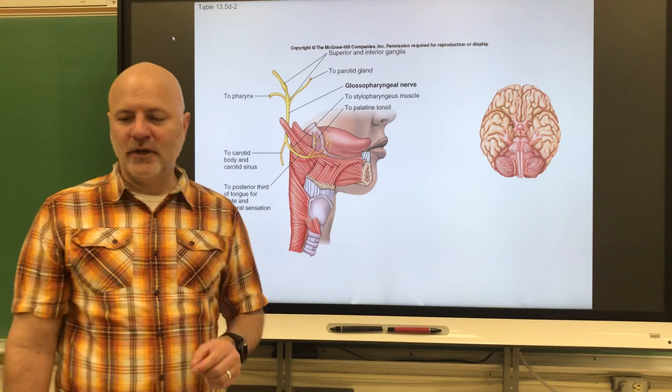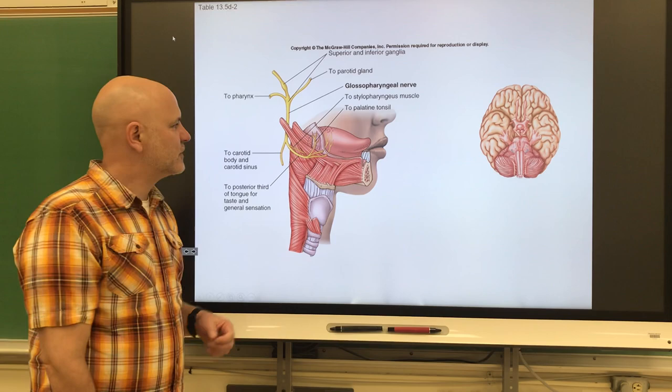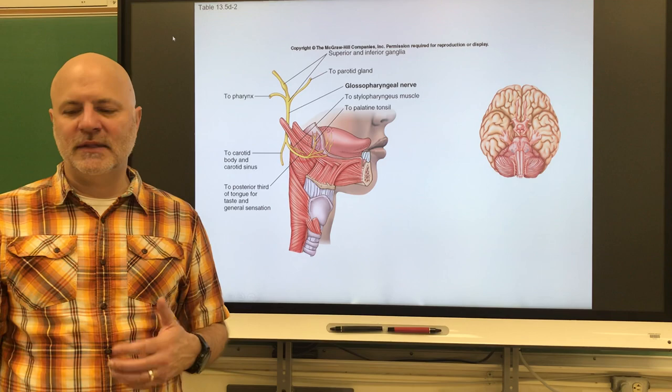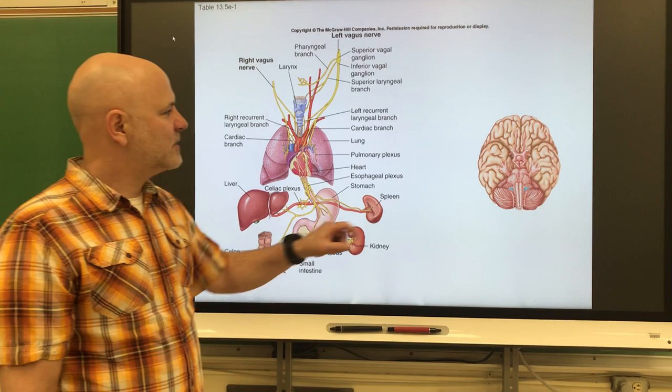Next is the glossopharyngeal, which is a mixed nerve. It is sensory on the pharynx, tonsils, and tongue — giving us a sense of taste as well. It is motor on the salivary glands and is also used in swallowing.